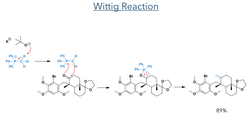The ketone was then reacted in a Wittig reaction. Triphenylmethylphosphonium bromide was deprotonated by potassium tert-butoxide to generate the phosphonium ylid. This reacted with the carbonyl group, forming a four-membered oxaphosphetane ring. This intermediate decomposed with the elimination of triphenylphosphine oxide and the formation of the exoalkene in an 89% yield.